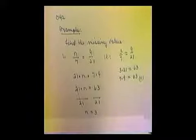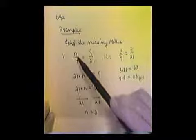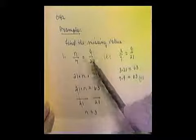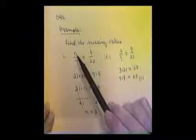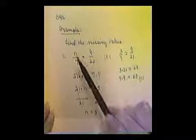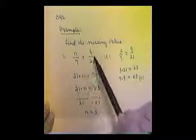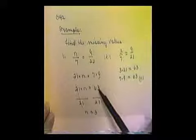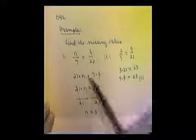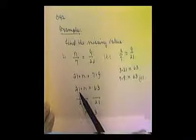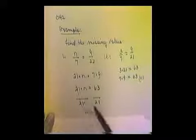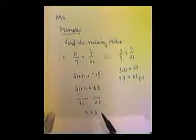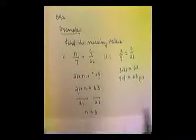Let's review what we did. We found the product of the extremes equal to the product of the means. So we multiplied 21 times n, and then 7 times 9, and set them equal to each other. Then we divided both sides by the number we're multiplying by the missing value. And we end up with 3 in this particular example.